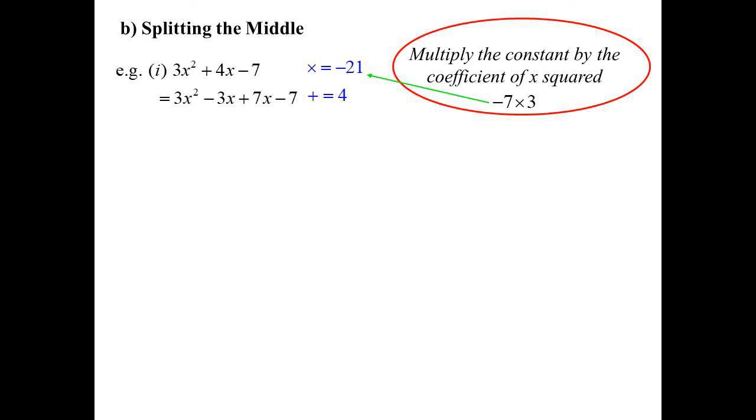And now it becomes a grouping in pairs question. So the first two, I'm going to go, oh it's 3x minus 1, and then 7x minus 1, I've got a common factor of x minus 1, 3x plus 7. So the reason I like it, is it keeps the same idea that I'm used to using, and I'm very comfortable with.